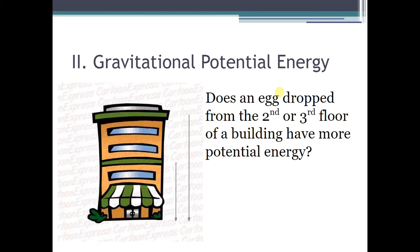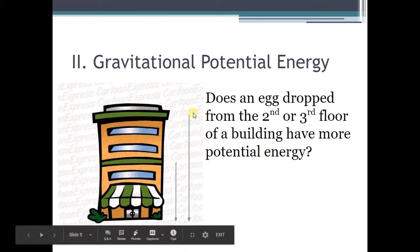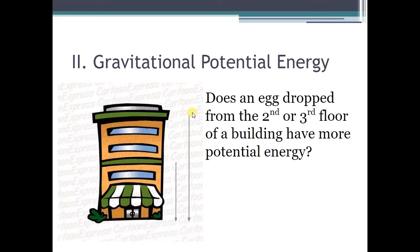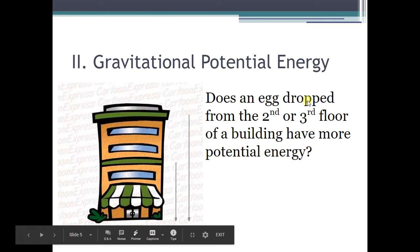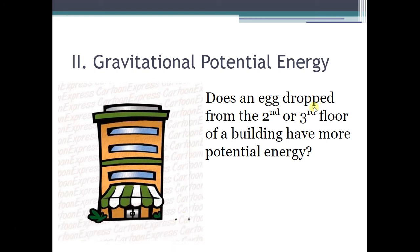Does an egg dropped from the second floor or the third floor of a building have more potential energy? Going back to what we looked at, the farther an object is away from the earth's surface, the more potential energy it has. The egg is farther away from the earth's surface on the third floor than the second floor, so it will have more potential energy on the third floor.